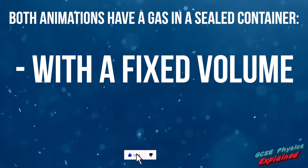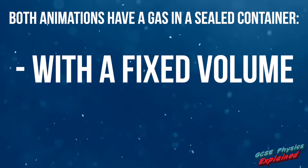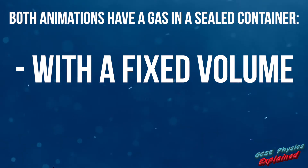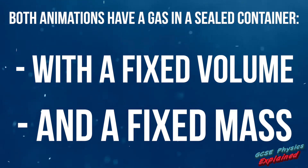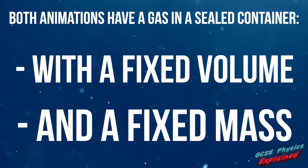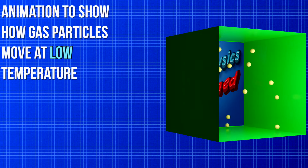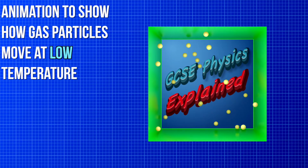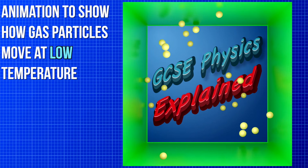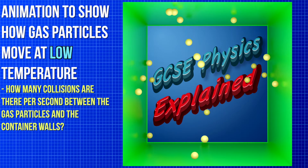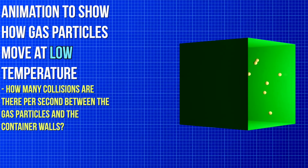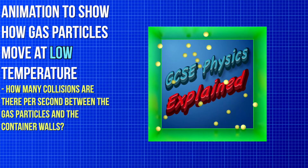Please note one side of the container is made from glass just so you can see inside. Both containers have a fixed mass of gas inside. I've simplified the model by only putting 20 particles in each container — in real life there'd be millions of particles. This first animation shows how gas particles move at a low temperature. Pay attention to how many collisions there are per second between the gas particles and the container walls — are there a lot or only a few?